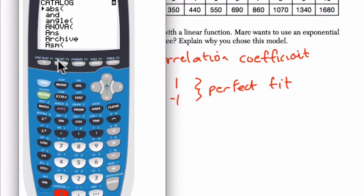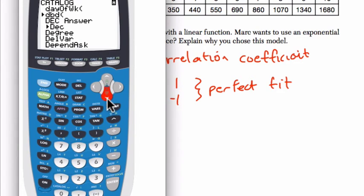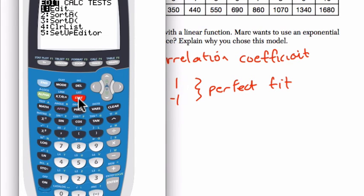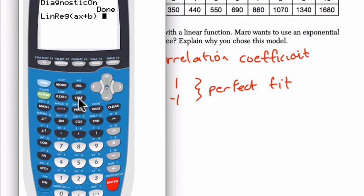I need to scroll down to diagnostic on. So I hit the button with the d above it. That's x to the negative first. That brings me down to the d section. And then I just scroll down until I reach diagnostic on. Just keep going. And there it is. Diagnostic on. Enter, enter. Now when I go back to stat, calc, choice 4.